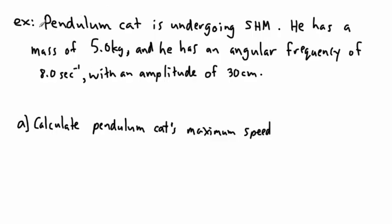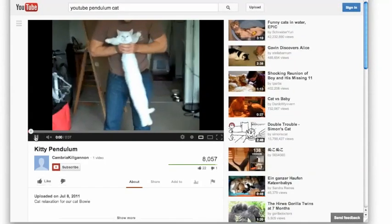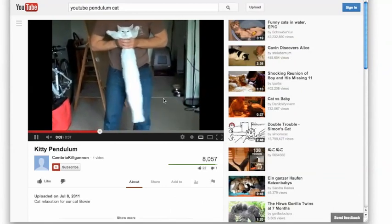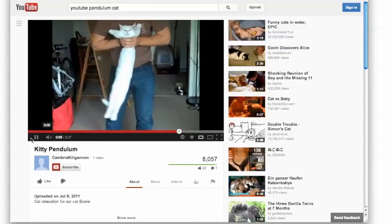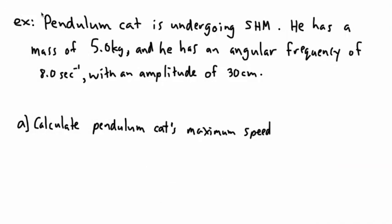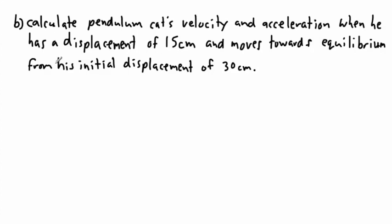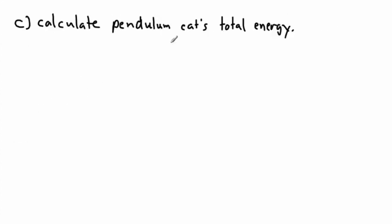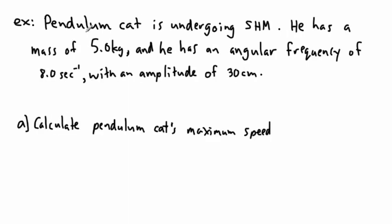I thought it'd be funny to use this silly pendulum cat, so pendulum cat is undergoing simple harmonic motion. It's this silly cat going back and forth. It doesn't really matter as long as it's something in simple harmonic motion. In this case he has a mass of 5 kilograms, an angular frequency of 8 seconds to the minus one, and an amplitude of 30 centimeters. What is his maximum speed? We're also going to ask about his velocity, acceleration, and total energy.